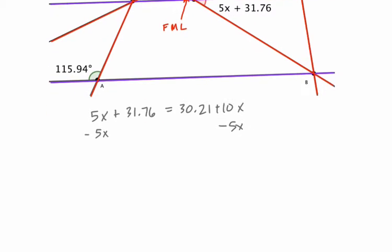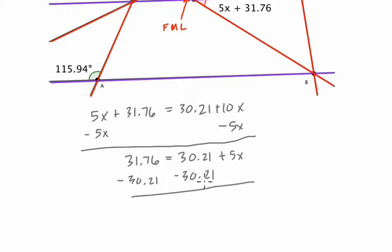I'm going to scroll down a little bit here. So these x's cancel out, and we've got 31.76 equals 30.21 plus 5x, right? 10x minus 5x is 5x. Now I'm going to isolate my variable by subtracting 30.21 from both sides. 30.21. And here, on the right side, all that's left is 5x. The 30.21's cancel out.